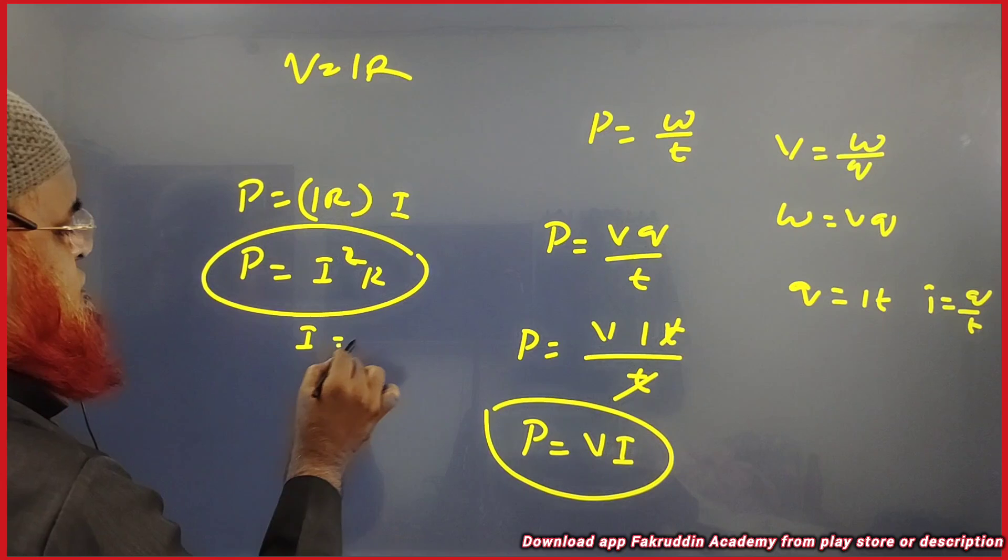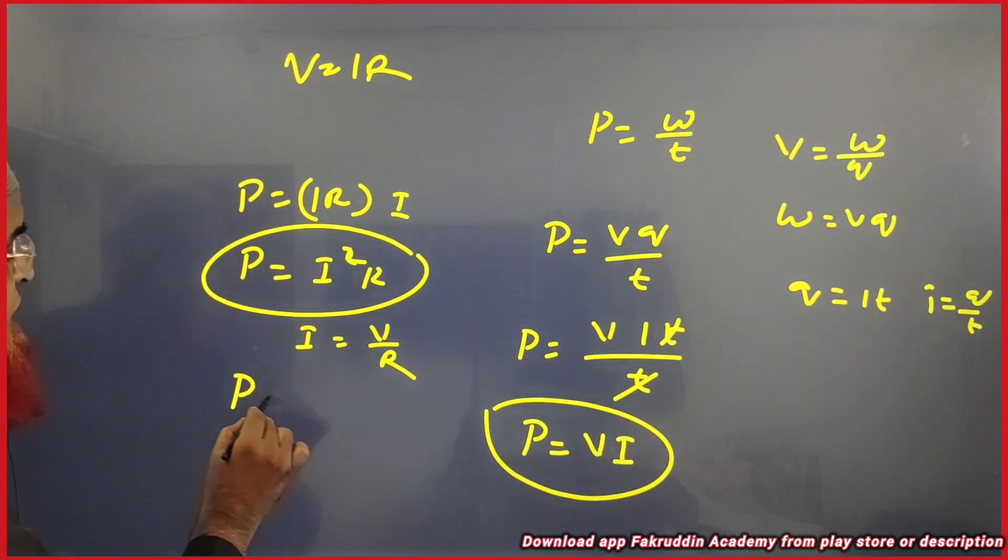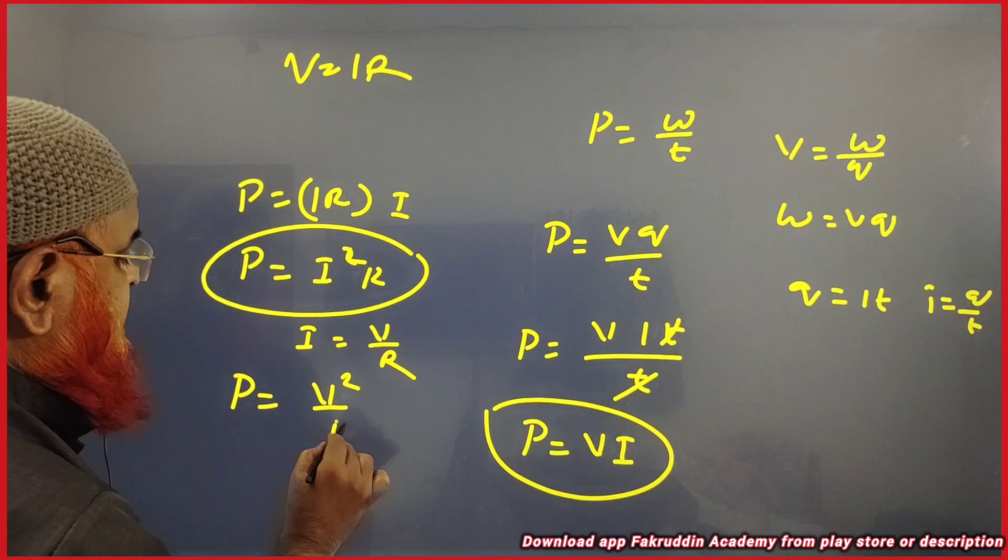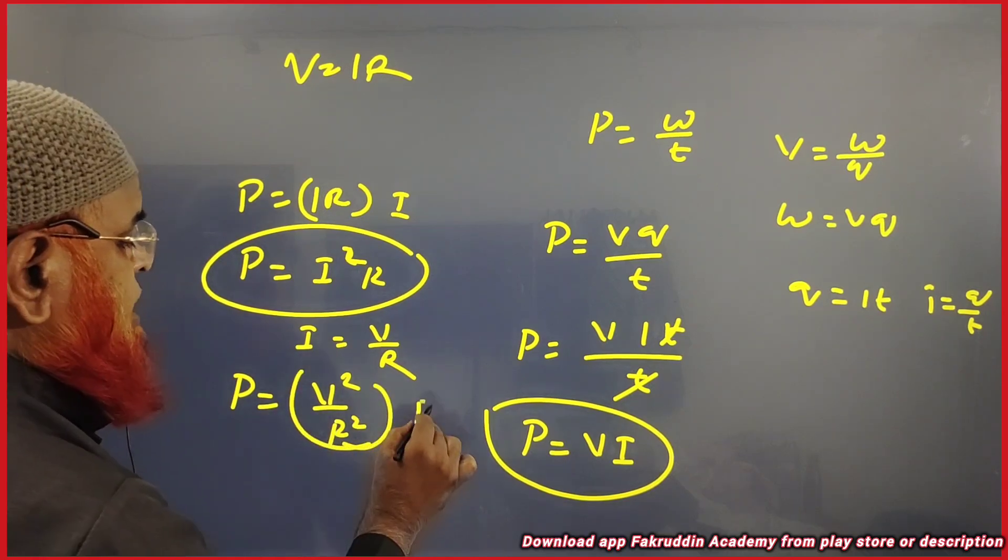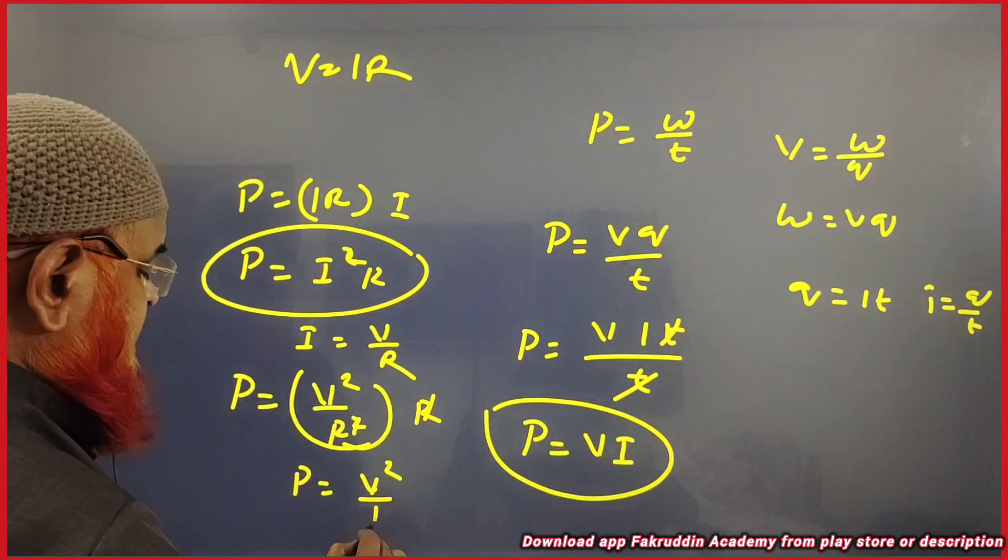The next formula is, you also know I is equal to V by R according to Ohm's law. So we will be writing power is equal to V square by R square into R. So R R gets cancelled. Power is equal to V square by R.